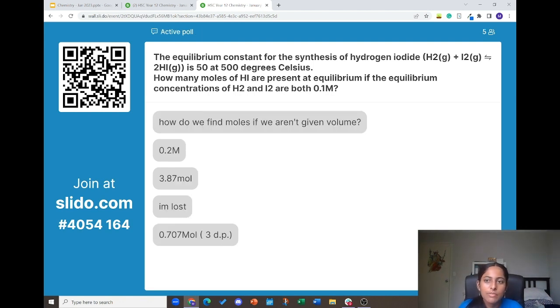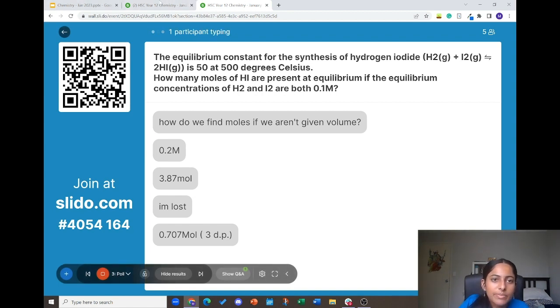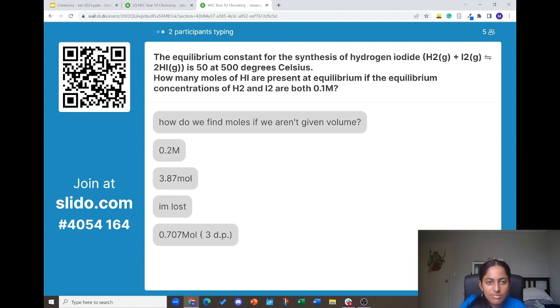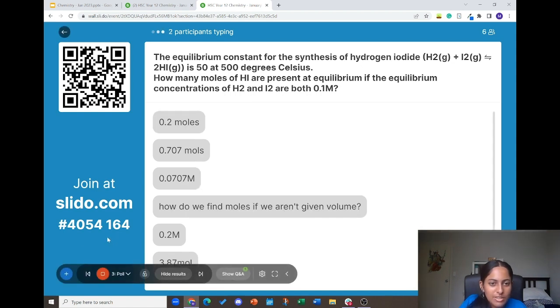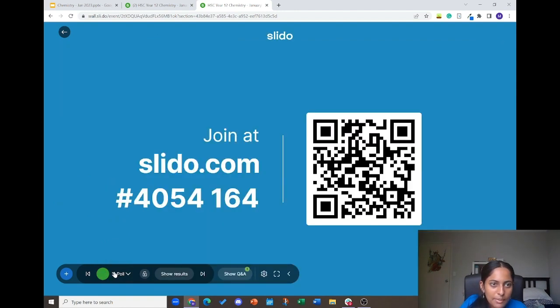How do we find moles if we aren't given volume? Good question, we will get into it. Okay, I think one more person's typing. Okay, most people are getting 0.707 and then some people are getting 0.2. Let's look at the question.